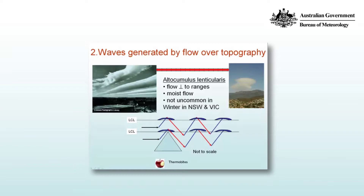This is Altocumulus Lenticularis, because of its lens shape. You can see on the picture on the right there are two levels of cloud. The flying saucer-shaped cloud on the left, from the NOAA library, shows streets of cloud separated by regular clear bands. This is not uncommon in wintertime, particularly in New South Wales in a strong westerly, or in Victoria in either a westerly or a northerly.